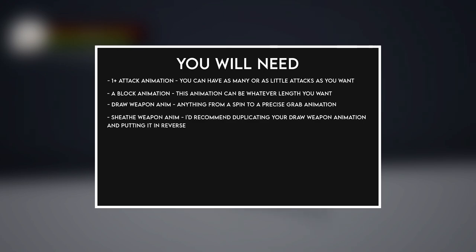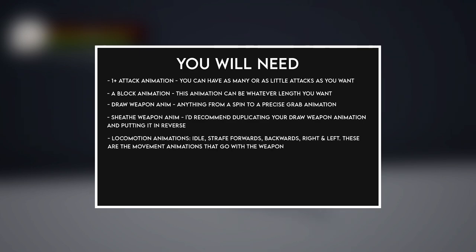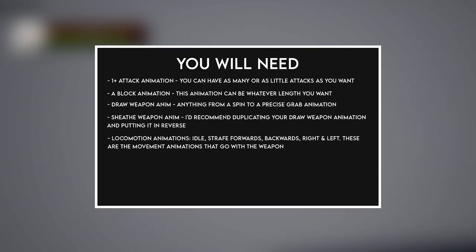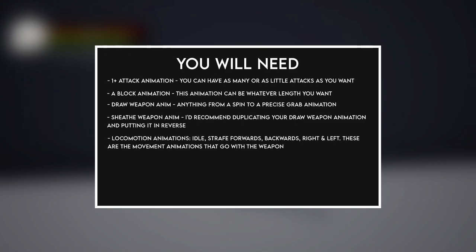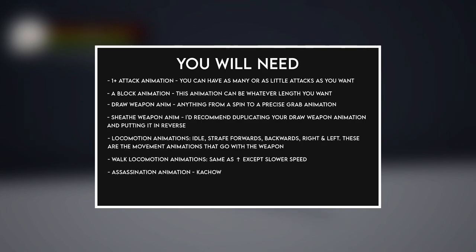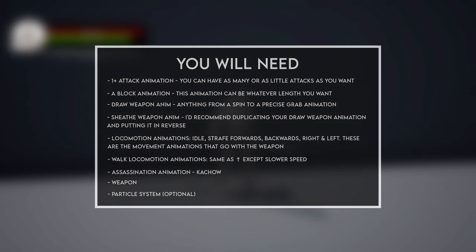You'll also need a group of locomotion animations: an idle, a strafe forwards, backwards, right, and left animation, plus walking versions of those strafe animations that play at a slower speed. You'll also need an assassination animation, a weapon mesh, and optionally a particle system specific to that weapon. In today's tutorial we're going to be adding staff combat, and all the required assets are in the description to download.